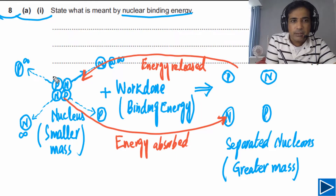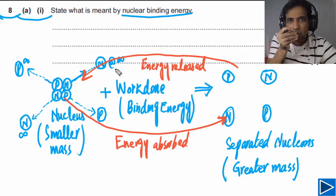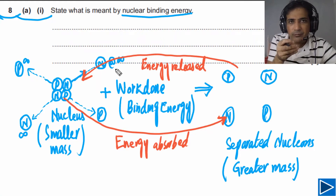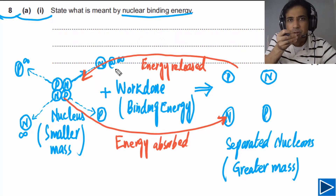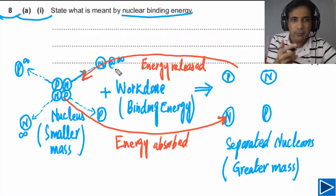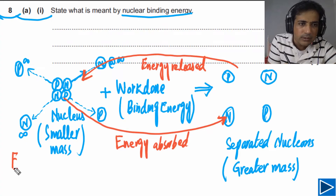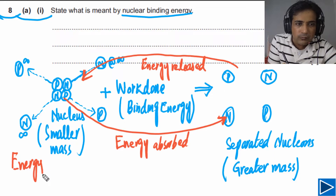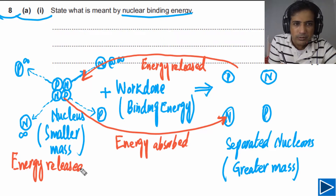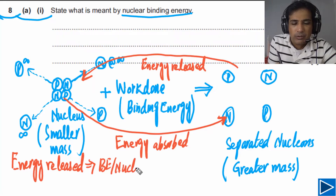In that case, binding energy per nucleon increases. If binding energy per nucleon increases, energy will be released. If binding energy per nucleon decreases, energy will be absorbed. Energy is released from a nuclear reaction when binding energy per nucleon increases. This is a very important point.